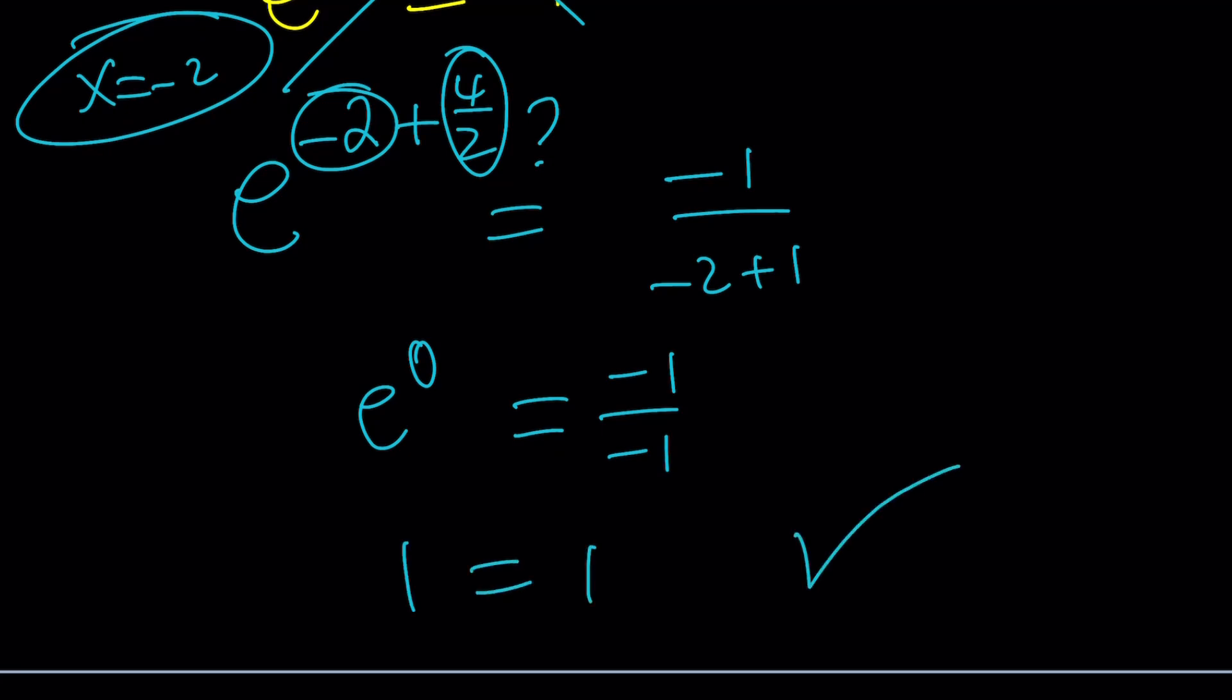Therefore, x equals negative 2 is a valid solution. And it is the only valid solution. Make sense?